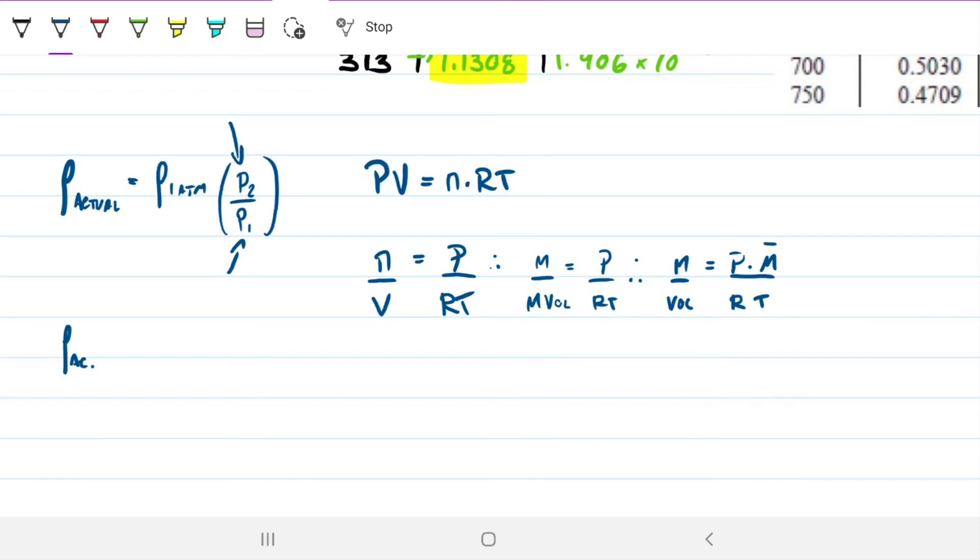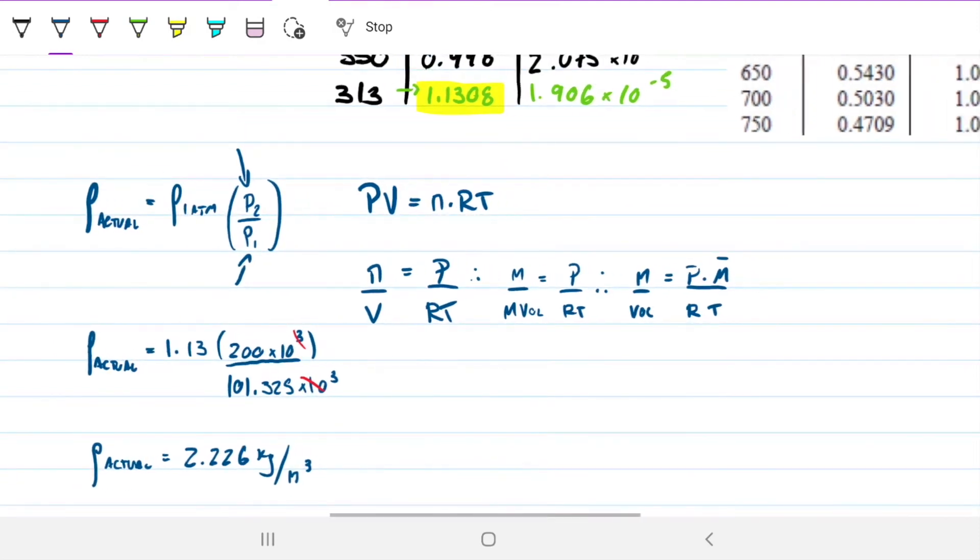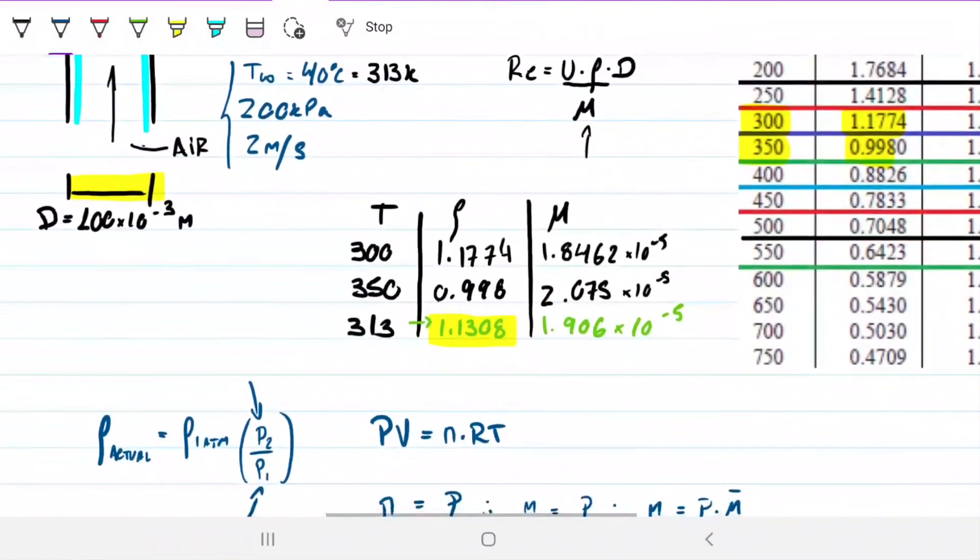So density actual equals, what's the one atmosphere one? It's 1.13. And then if you want 200 kilopascals, 200 times 10 to the 3 pascals, and one atmosphere is 101.325 times 10 to the 3. So this is pascals, pascals go away. Just keep the units here. 2.226. That is kilograms per meters cubed, same unit as the 1.13. All right, so all that to be able to find density. That was specific weight. That was a lot of work for that.